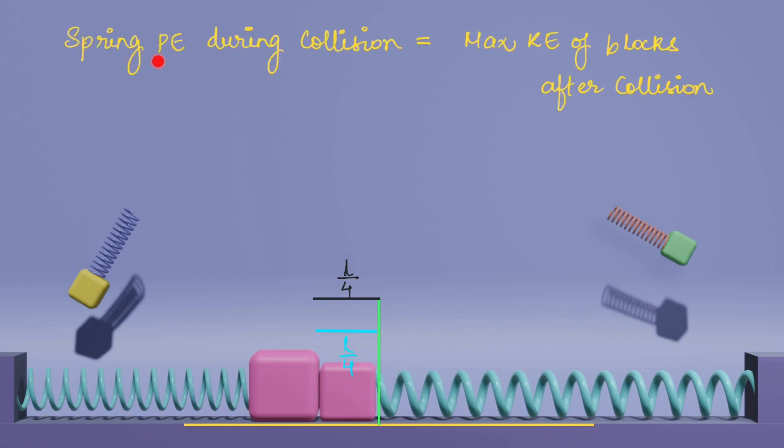We can say the spring potential energy during collision equals the maximum kinetic energy of the blocks after collision. Whatever spring potential energy is available now goes into the kinetic energy of the combined mass. So the spring potential energy during collision is half k times L by 4 squared plus half times 2k times L by 4 squared equals the maximum kinetic energy of the combined mass.